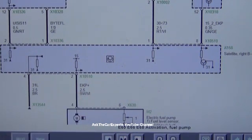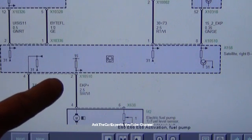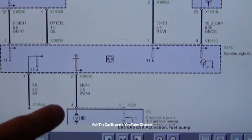You can see it says EKP, that's electronic fuel pump control, positive. That's going to be sending power from pin 2 of the satellite sensor to pin 4 at the fuel pump.